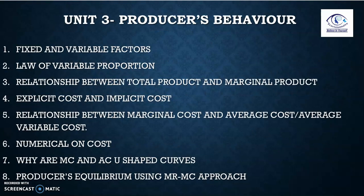Coming to the third unit — also 15 marks — we cover production first: fixed and variable factors, and the law of variable proportion, which is a sure-shot question with 95% chances of appearing in the final paper. If you have done law of variable proportion, you've covered the relationship between TP and MP as well. It's preferable to give diagrams when writing the relationship, along with explicit and implicit costs with their meanings — a numerical may also be asked.